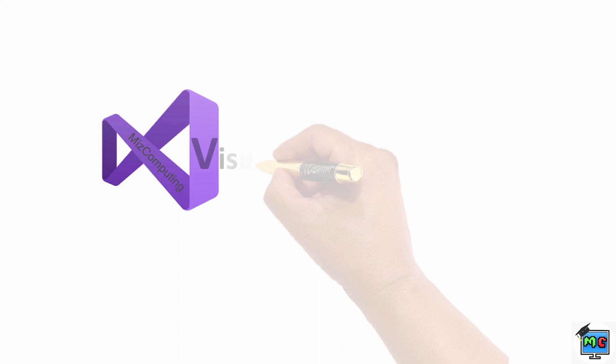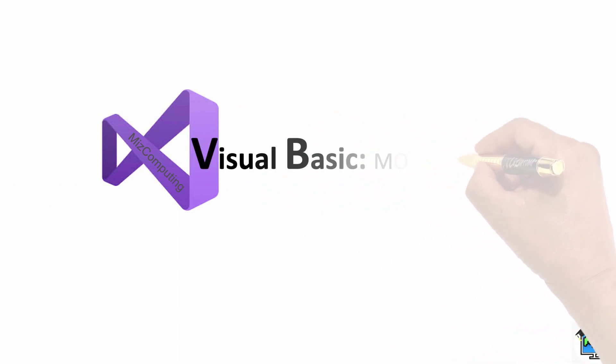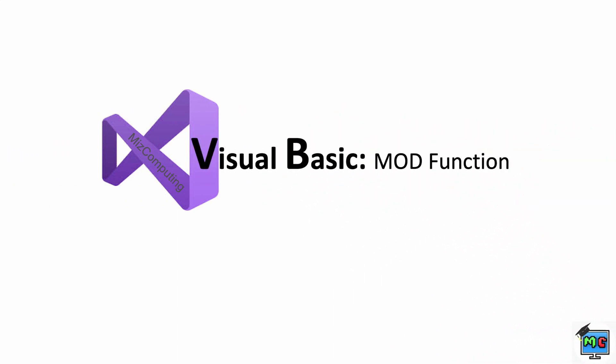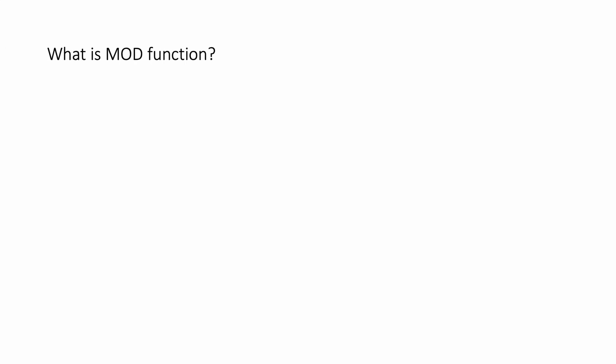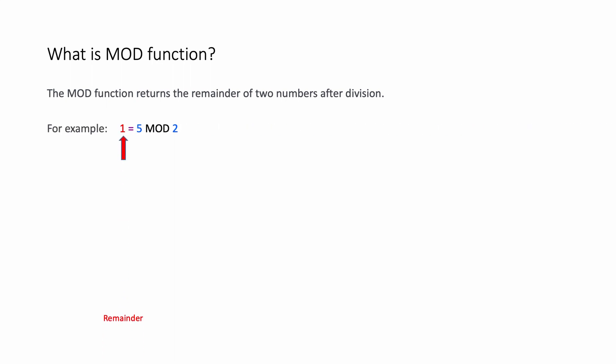Okay, so the mod function — just to remind ourselves again, what does the mod function do? It divides a number and whatever the remainder is, it gives you that remainder. So that's what we're going to do right now — we're going to actually create a program and use the mod function.